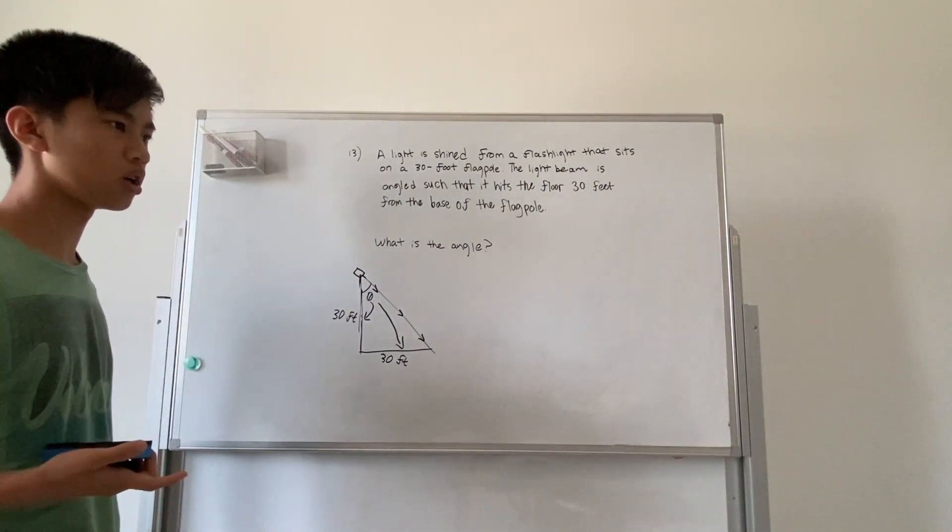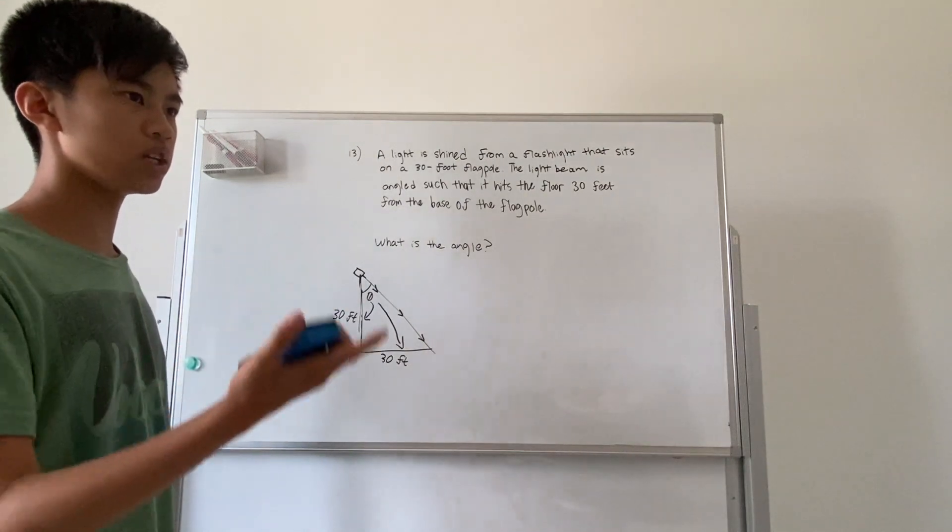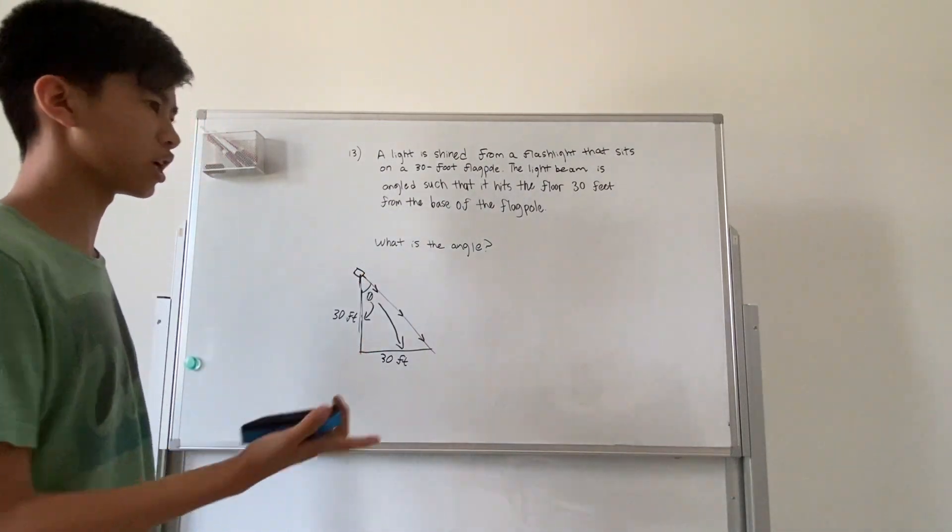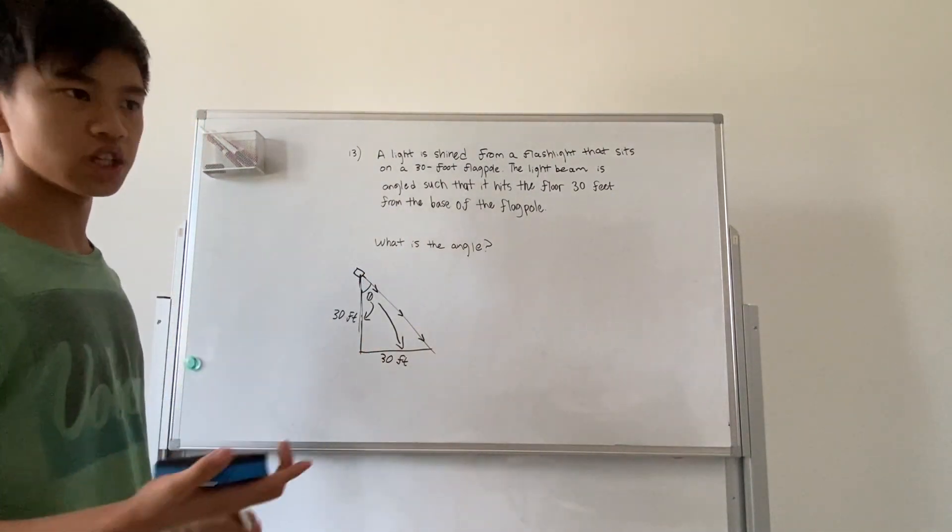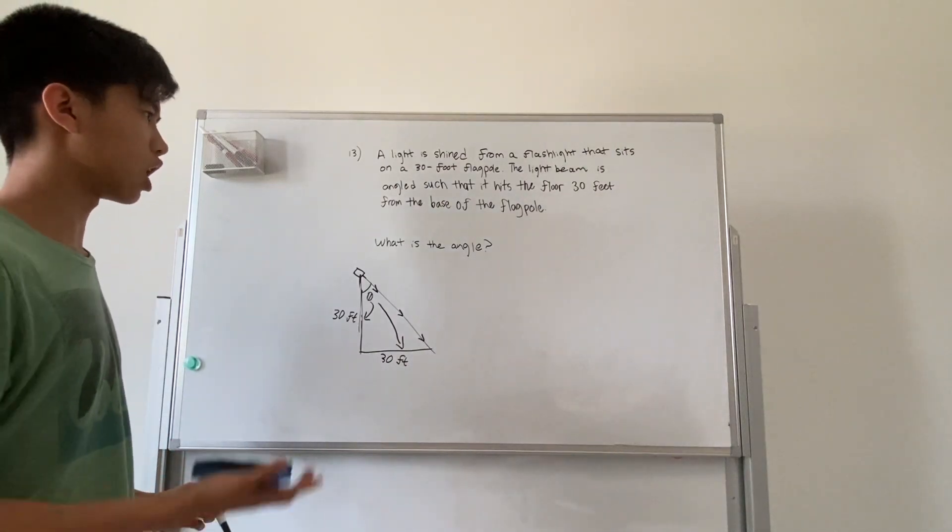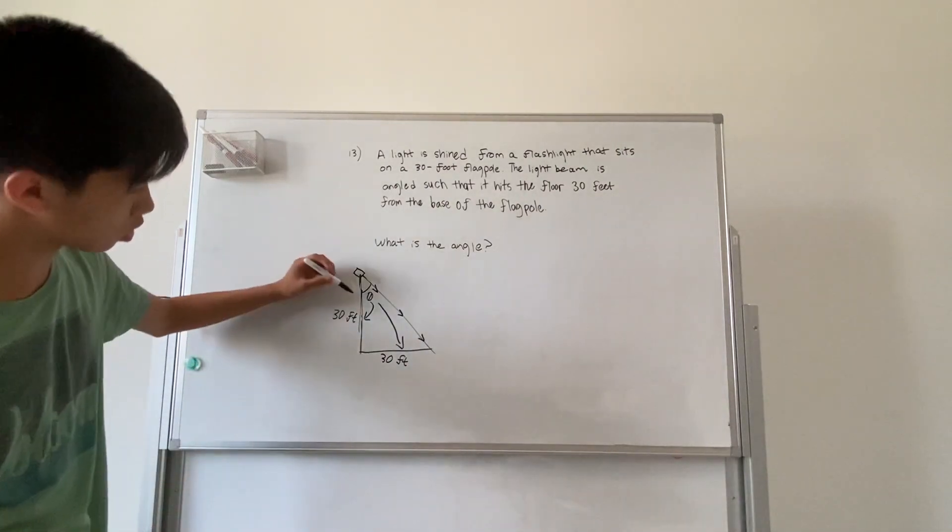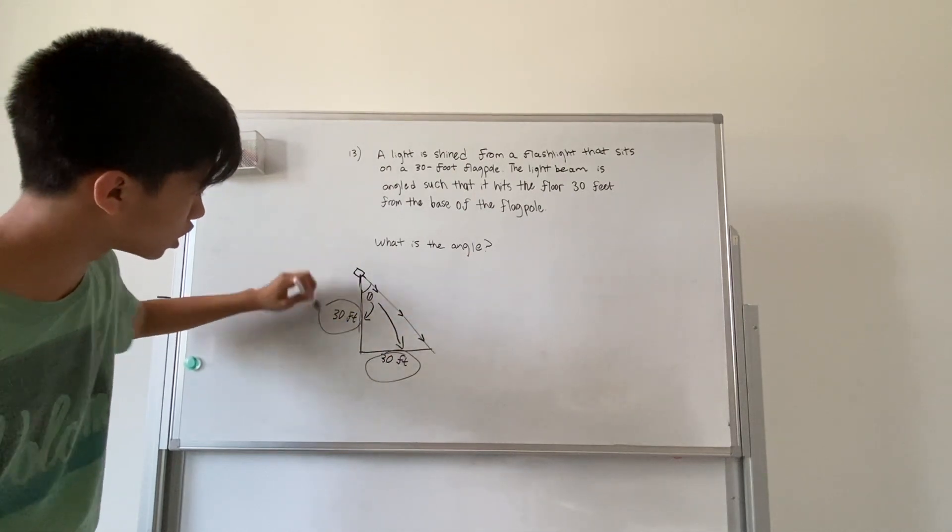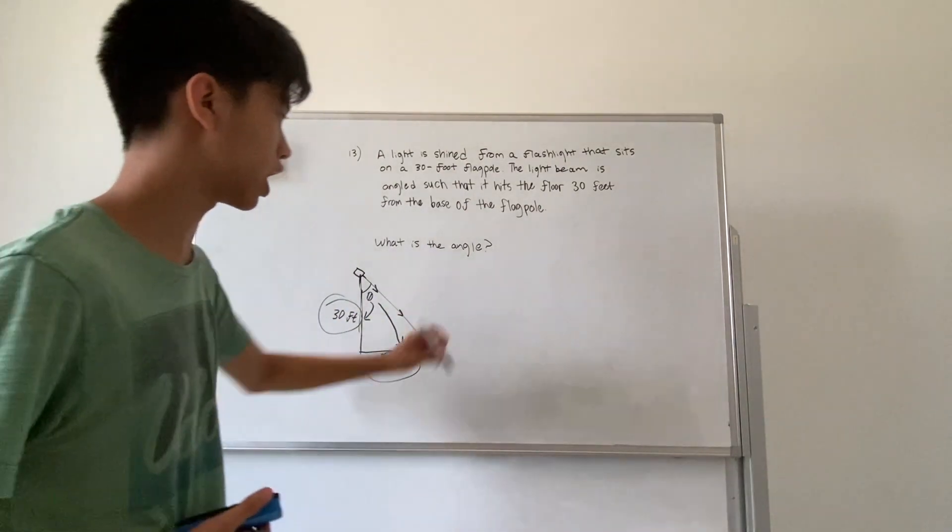Using SOHCAHTOA: sine is opposite over hypotenuse, cosine is adjacent over hypotenuse, and tangent is opposite over adjacent. Well, it looks like we have our opposite and we have our adjacent, so we have to use tangent.